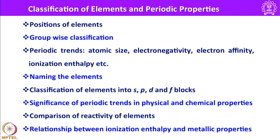Let us also understand how to name the elements. The International Union of Pure and Applied Chemistry has come up with a formula to name elements that are not yet listed in the periodic table. As of now we know about 118 elements, all have been named. Suppose in future elements of higher atomic number — say 130, 140 or 150 — are discovered, we should have a proper methodology to name them.